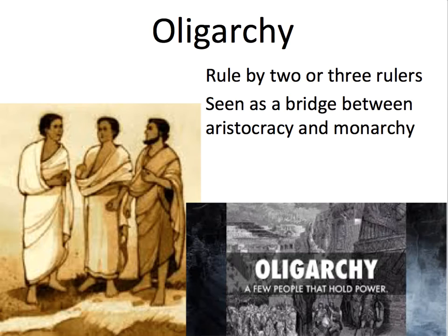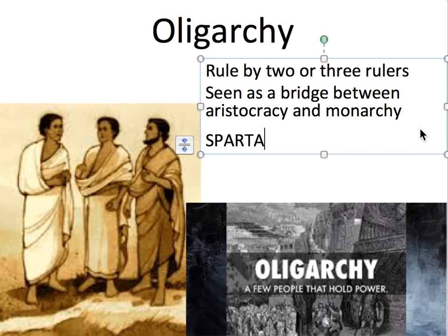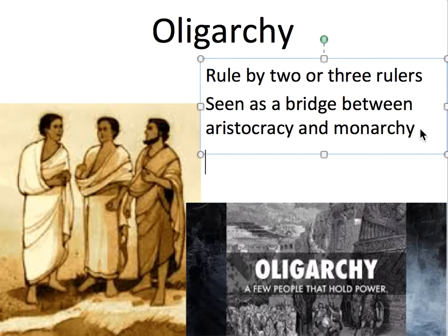An oligarchy means rule by two or three rulers, and it's seen as sort of a bridge between an aristocracy and a monarchy. So you had a monarchy, it was overthrown by the aristocracy, but then a few aristocrats rose above and became rulers. One of the areas you see this in is Sparta. When we learn about the Persian Wars, you'll hear that Sparta's king Leonidas went to the Battle of Thermopylae — but they actually had another king who stayed back to do all of the administrative work.